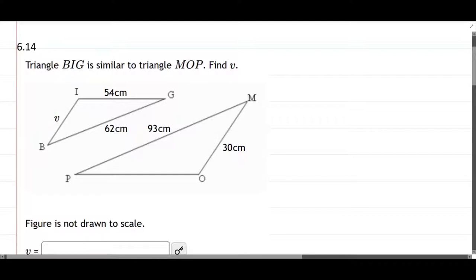So let's first of all figure out what these correspond to. We'll go with 54 first. So 54 is I-G, which corresponds to O-P, which is right here.